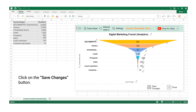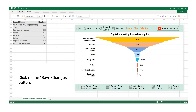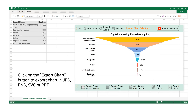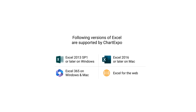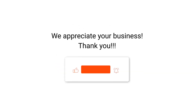Click the Save Changes button, then click the Export Chart button to export the chart in JPG, PNG, SVG, or PDF format. The following versions of Excel are supported by ChartExpo. We appreciate your business — thank you.